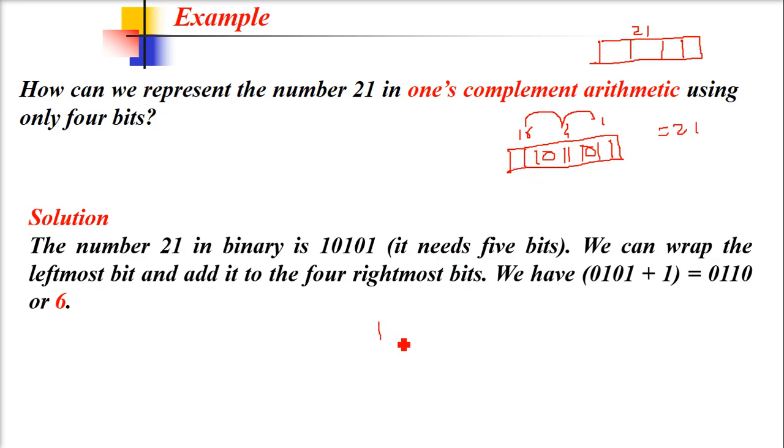We can wrap it around. Take this 1, bring it here, discard it from the left position, and add them. Just a binary addition: 1 plus 1 in binary is 0 with carry 1, then 1 plus 0 is 1. We get this as the wrapped sum, which is 6. This is not the checksum yet—it's just an addition, a wrap-around addition.